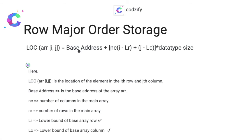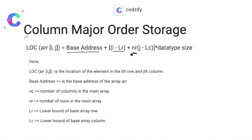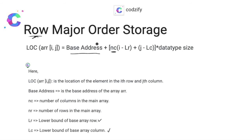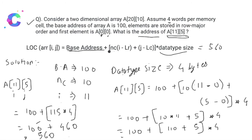In column major order, NR denotes the number of rows in the main array. When calculating column major, you specify the number of elements in a row, whereas for row major you specify the number of elements in a column. That's the only difference. I hope you got the concept. Please consider subscribing for more videos like this!